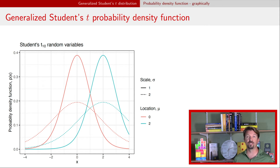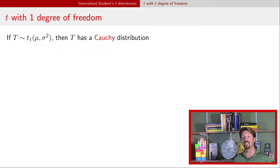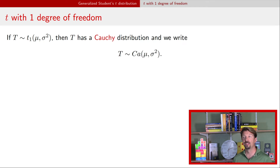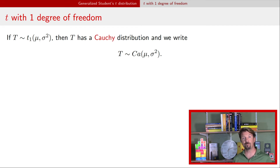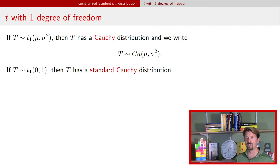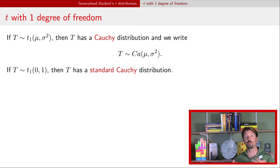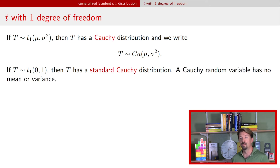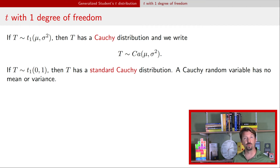The generalized Student's t-distribution has relationships to many other distributions. If you have degrees of freedom equal to 1, the generalized Student's t actually has a Cauchy distribution, denoted Ca with location and scale parameters in parentheses. The standard (non-generalized) Student's t with df=1 corresponds to a standard Cauchy with location zero and scale one. Since nu=1 satisfies neither the requirement for a defined expectation nor variance, the Cauchy distribution has no mean and no variance.